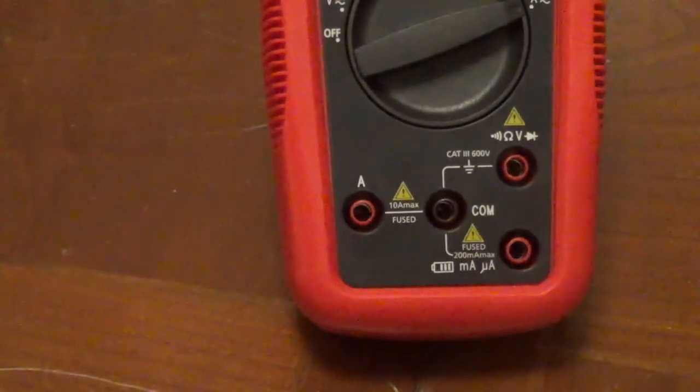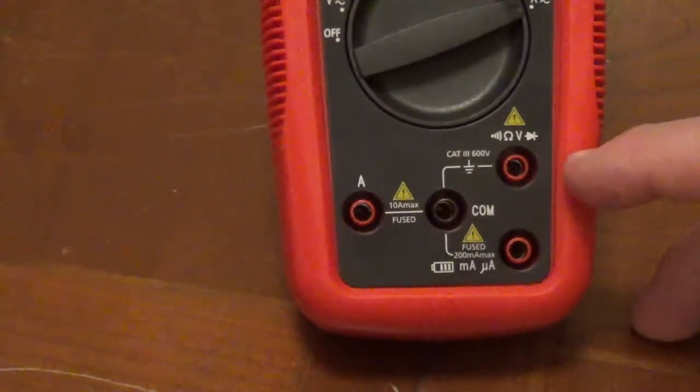Each one has symbols that correspond to what you're testing. You would put your red probe here if you're testing for continuity, resistance, volts, or you're testing diodes.